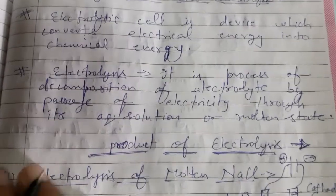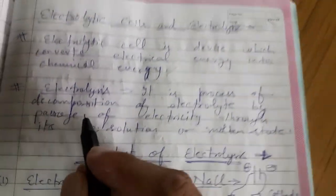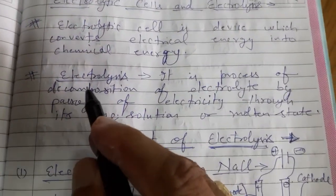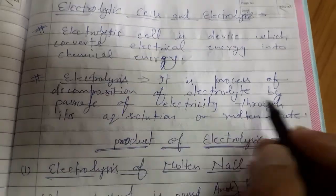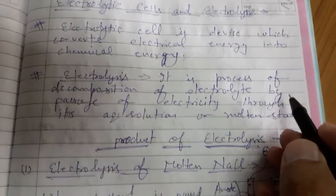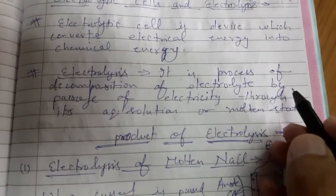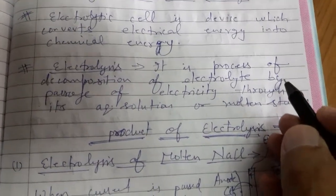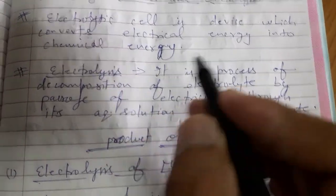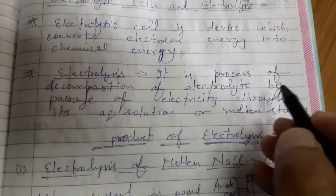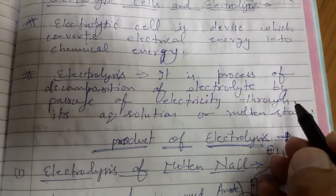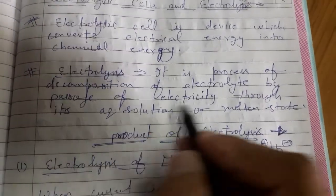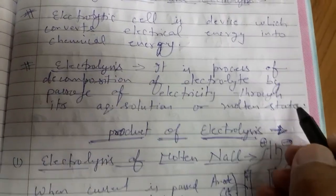Number two: electrolysis. Electrolysis is a process of decomposition — decomposition means breakdown — of an electrolyte by the passage of electricity through it in its aqueous or molten state.